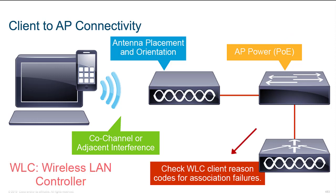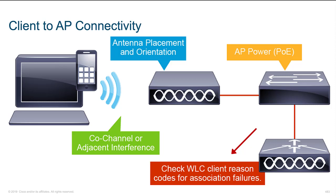The good news is that if you deployed the system with a Wireless LAN Controller (WLC), you can use its graphical user interface to check error codes generated when the system attempts to attach a client through the AP. Those codes can help you troubleshoot and identify the root cause of the failure. There are many, many more issues that can arise when trying to deploy a solid network that supports access point connectivity.